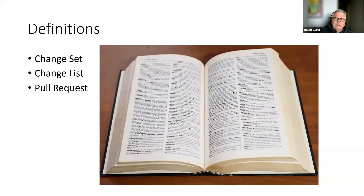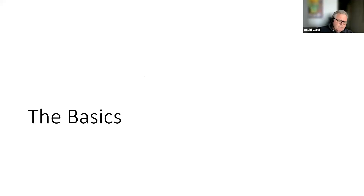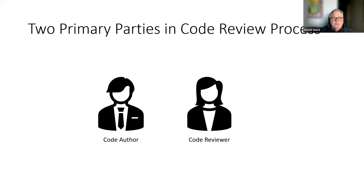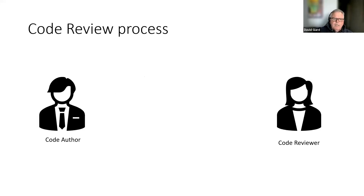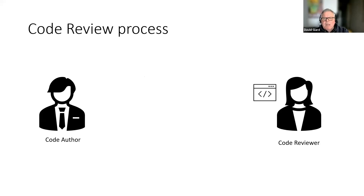A lot of people including me sometimes use those terms interchangeably, so I apologize in advance. There are two parties in a code review process: the code author and the code reviewer. The code author writes some changes, creates a change set and change list to document it, and submits a pull request — which is a request to merge that code with the main branch.